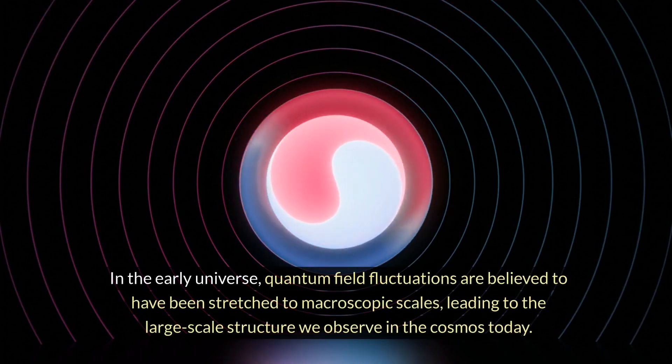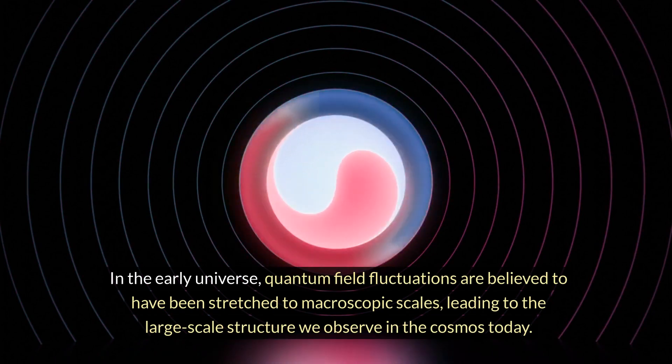In the early universe, quantum field fluctuations are believed to have been stretched to macroscopic scales, leading to the large-scale structure we observe in the cosmos today.